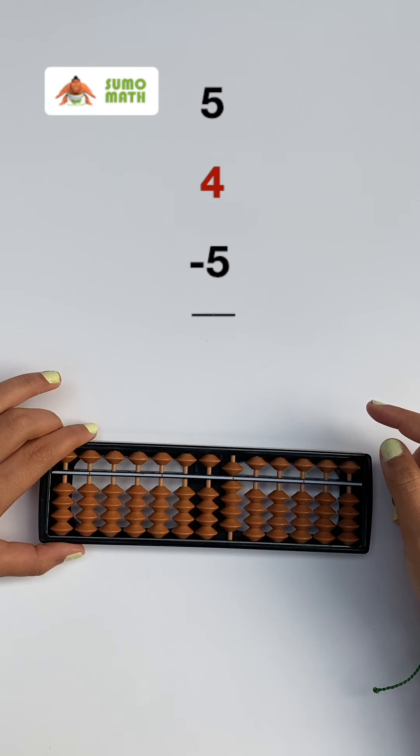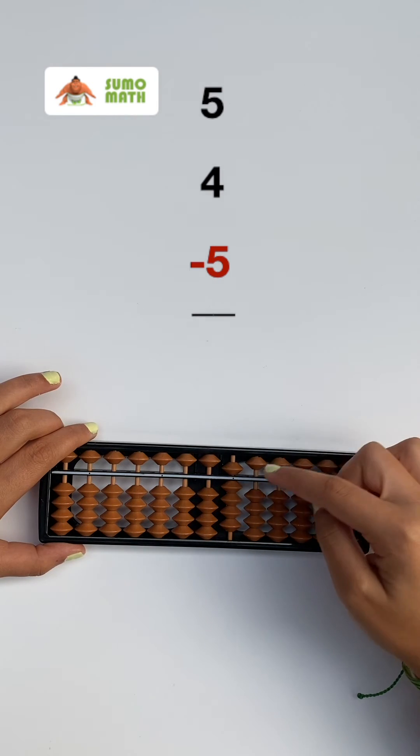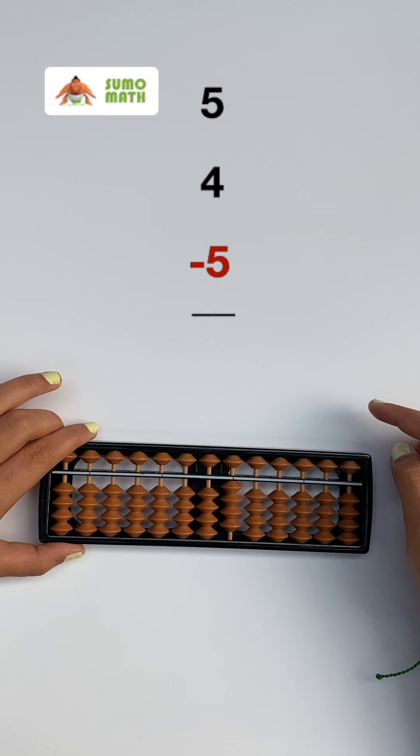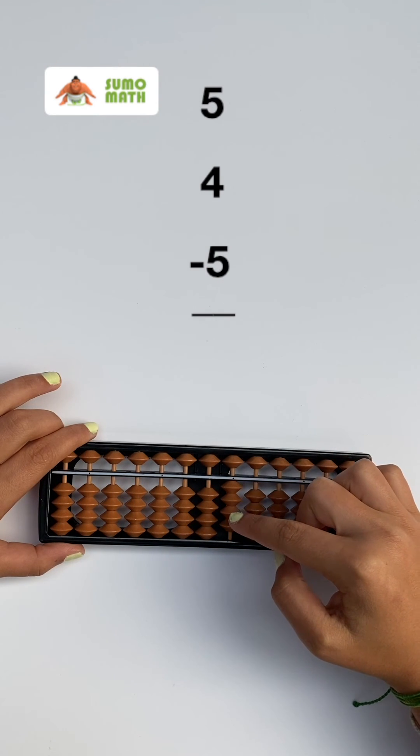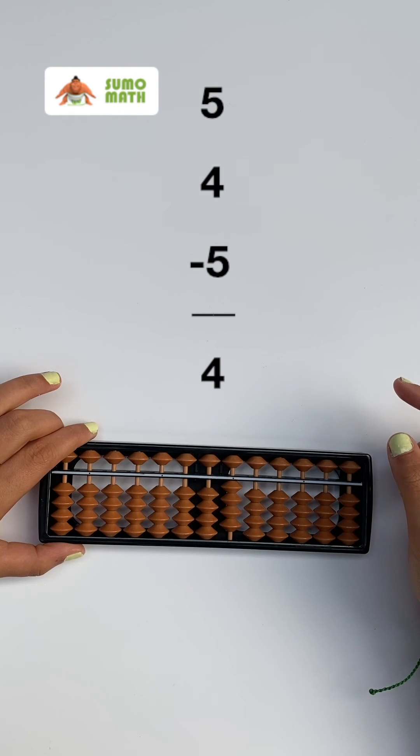In bead03, we will learn to subtract 5 by simply moving the heavenly bead away from the reckoning bar with the index finger, like so. So, 9 minus 5 is 1, 2, 3, 4 for the answer of 4.